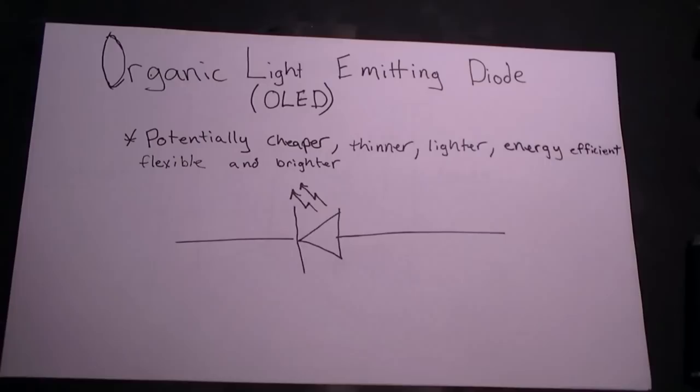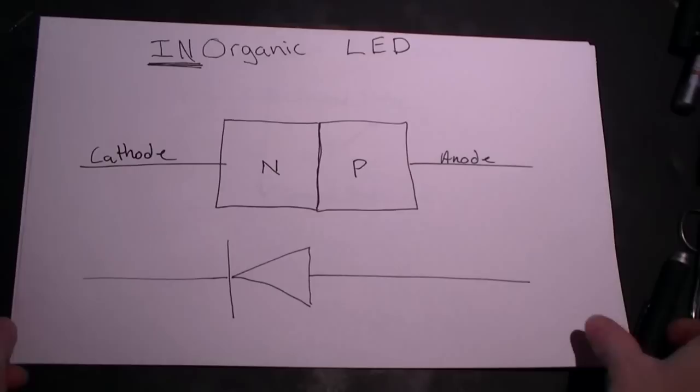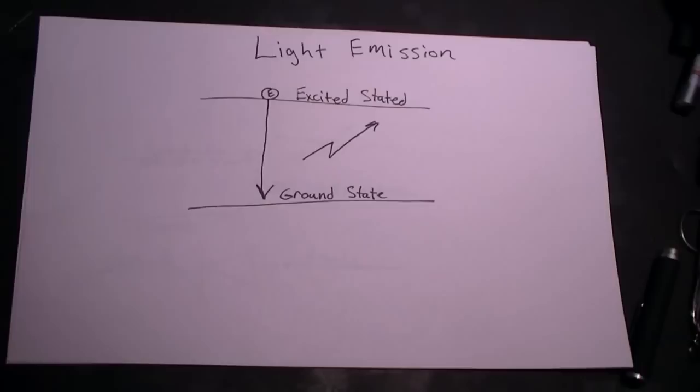But first, let's take a look at inorganic LEDs. They consist of an N and a P type semiconductor. Light is emitted when electrons drop from a high energy state to a lower energy state.